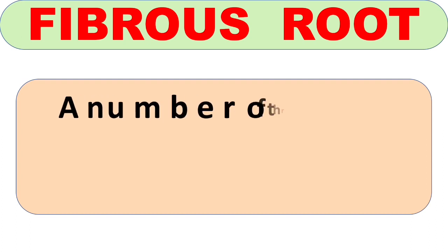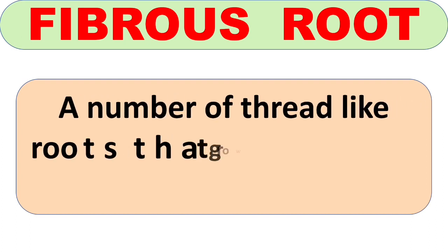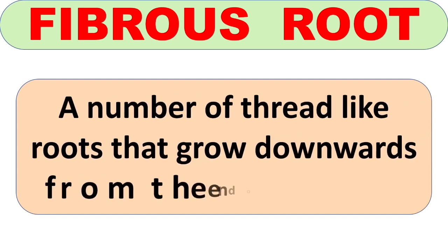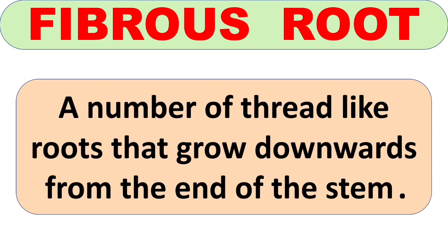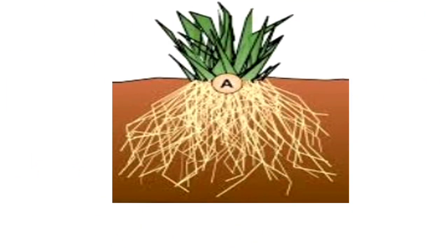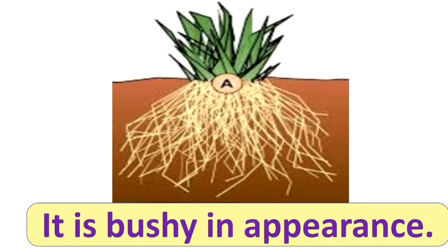The next type of root is fibrous root. A number of thread-like roots that grow downwards from the end of the stem form the fibrous root. As you can see in this picture, it is bushy in appearance.